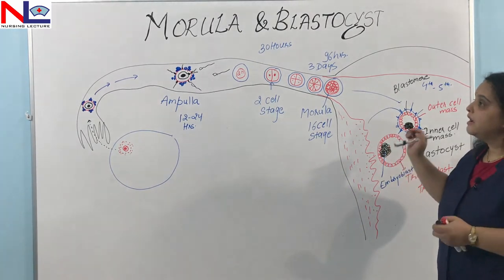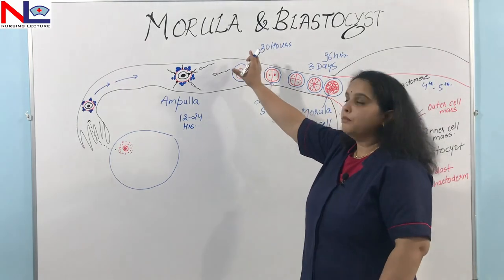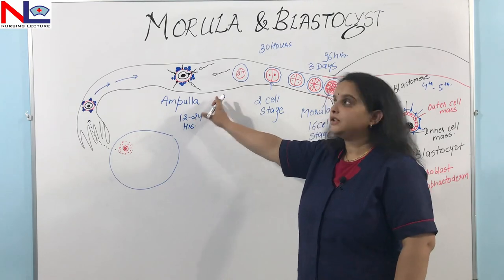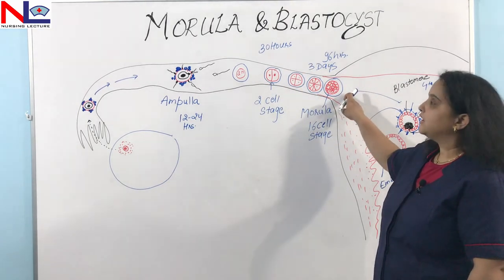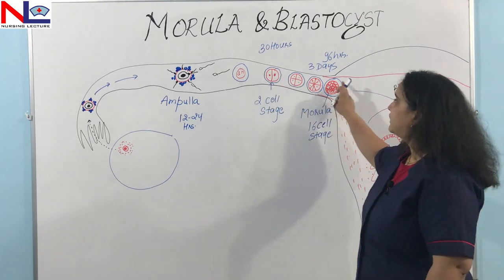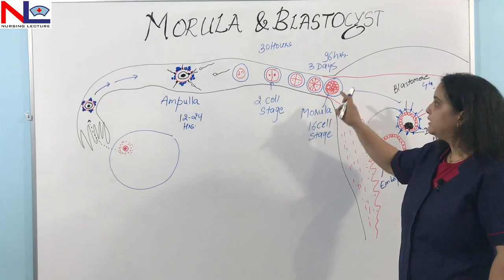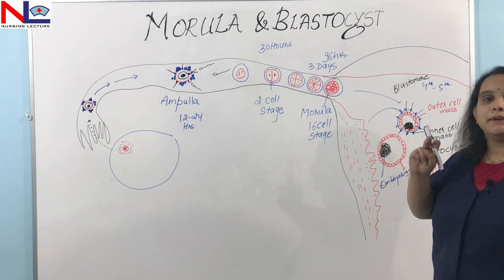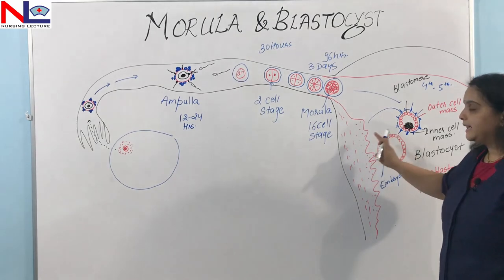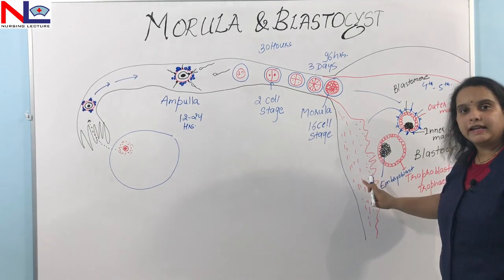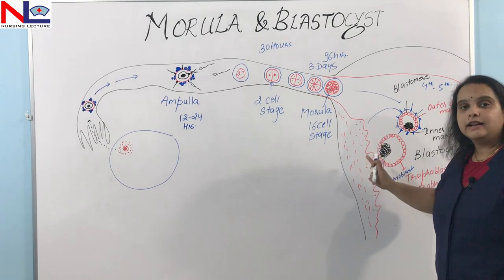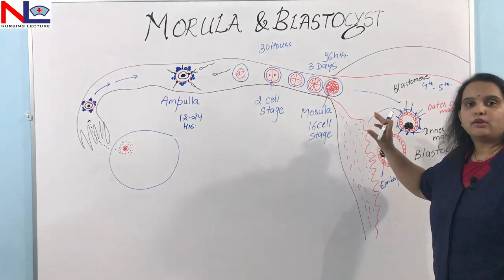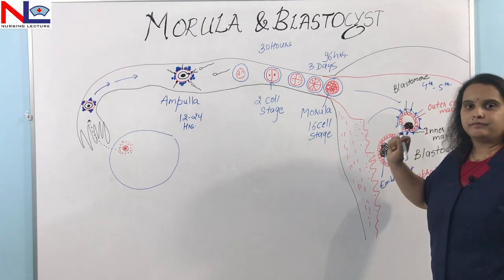In this video we have seen how the morula is formed — that is, after zygote formation, the 16-cell stage structure lying in the uterine tube — and how this morula becomes the blastocyst. In my next video I will show you how this blastocyst gets implanted in the endometrial lining, that is the innermost lining of the uterus, and how this endometrium comes to be called the decidua. Thank you.